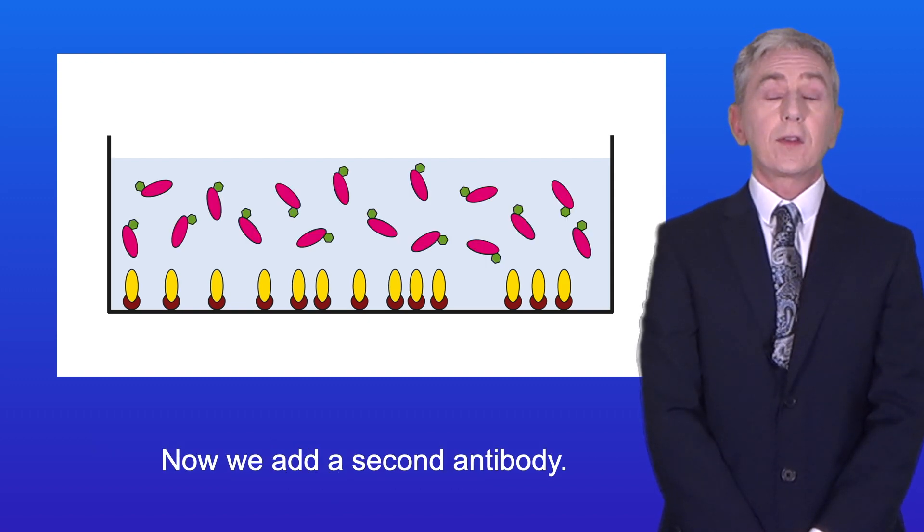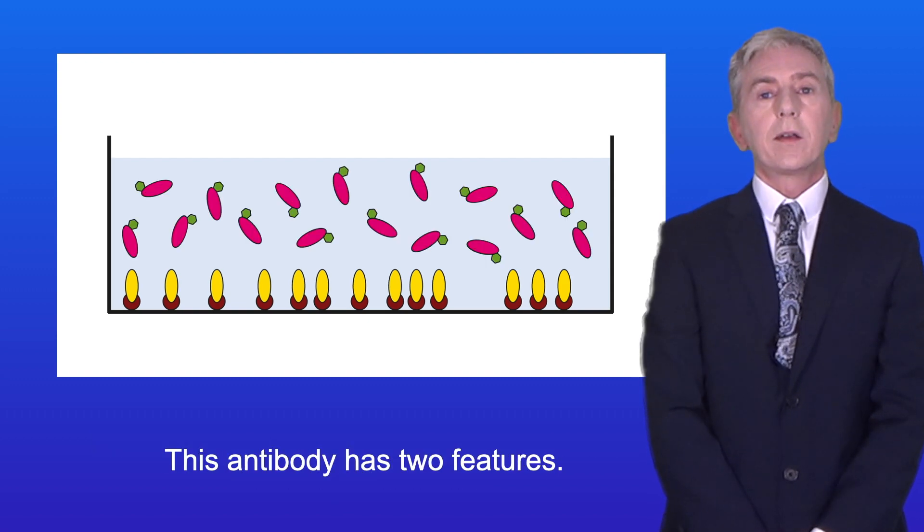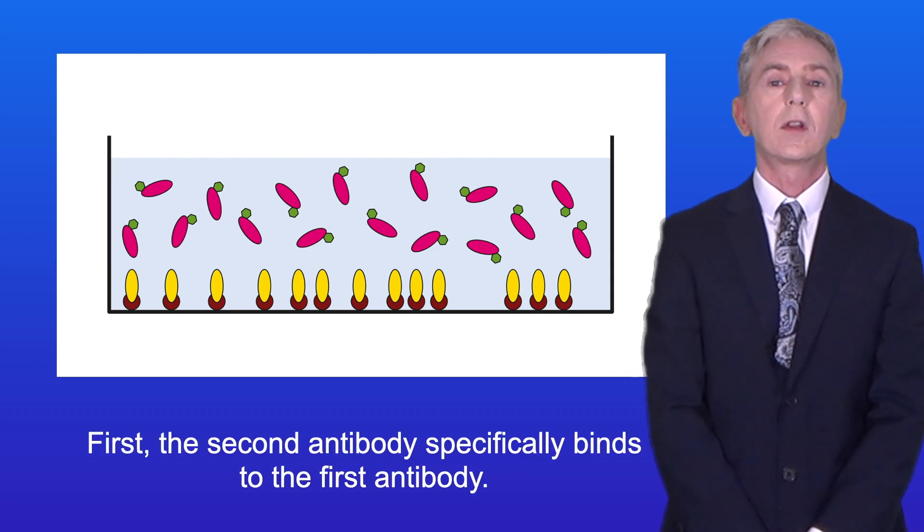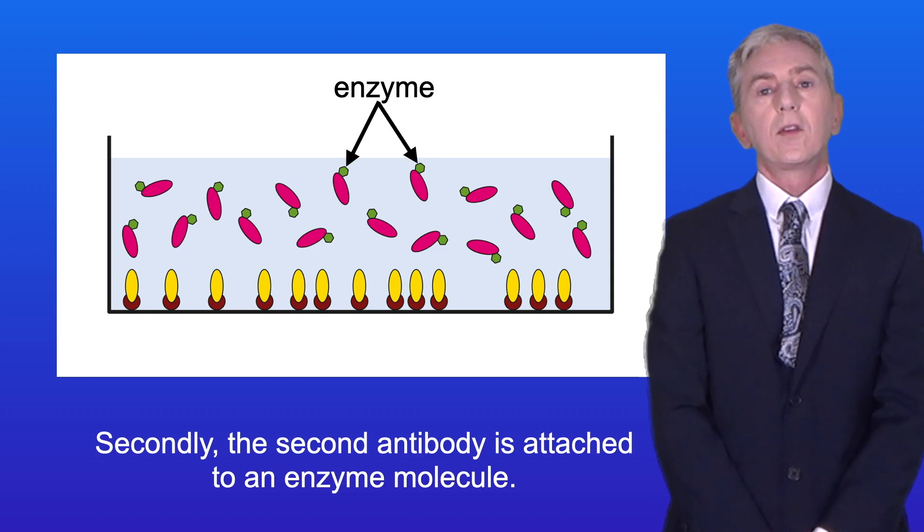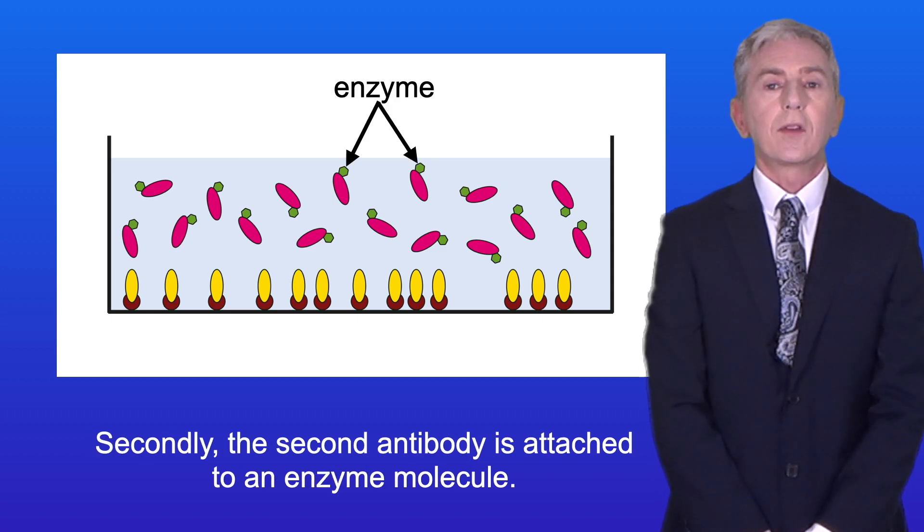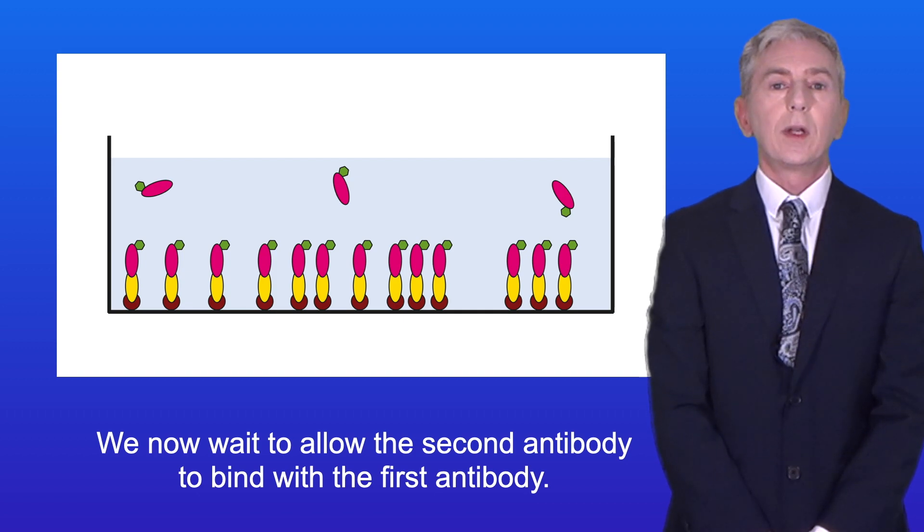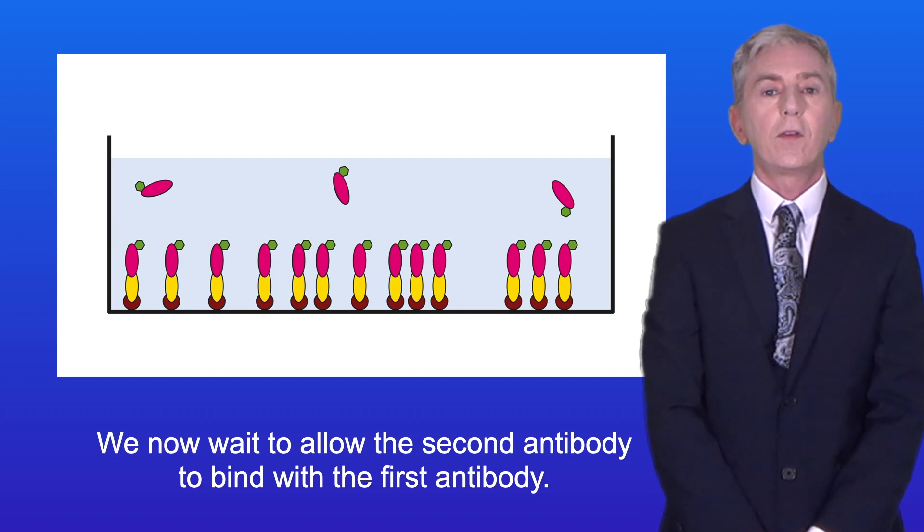Now we add a second antibody. This antibody has two features. First, the second antibody specifically binds to the first antibody. Secondly, the second antibody is attached to an enzyme molecule. We now wait to allow the second antibody to bind with the first antibody.